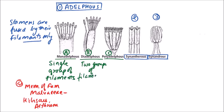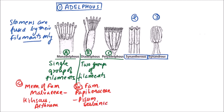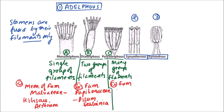Diadelphous means if two groups of filaments are formed, then it is diadelphous. Examples include members of family Papilionaceae, like Pisum and Cassia. Polyadelphous means if many groups of filaments are formed, then it is polyadelphous. Examples include members of family Rutaceae, like Citrus and Melaleuca.